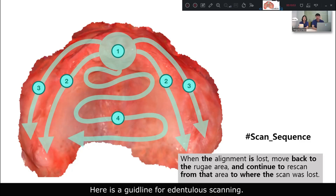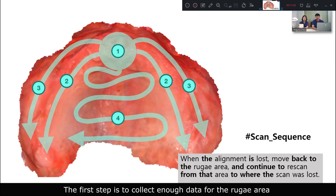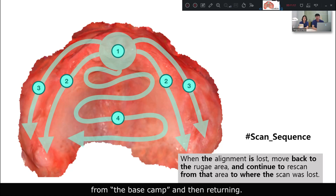Here's the guideline for intraoral scanning. The design academy posted a helpful video a few years ago. The first step is to collect enough data for the local area that has the most distinct characteristics. As the second step, move the scanner like a plane flying in multiple directions from the base scan and then returning.